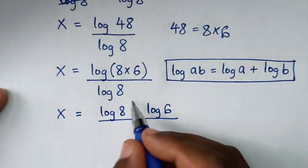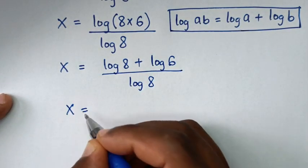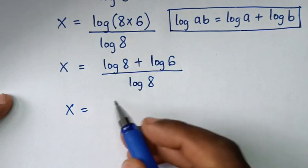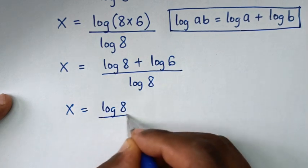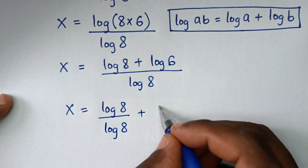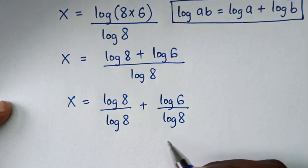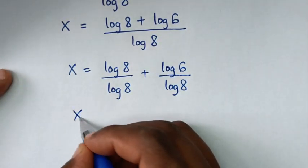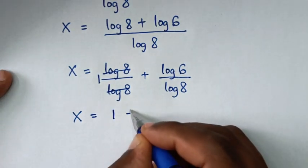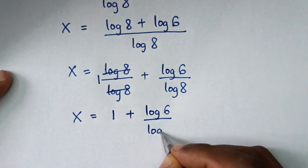Then over log of 8. It will be x is equal to — we'll divide by log of 8 in this part and this part, so log of 8 divided by log of 8 is 1. So it will be 1 plus log of 6 over log of 8.